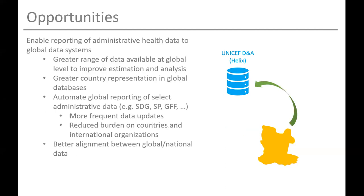We're also looking at reversing the flow of data for a select set of government-approved and authorized indicators, because we feel this has the potential to have a greater range of data available at the global level to improve estimation and analysis. There's an opportunity for countries to have greater representation in global databases while also automating some reporting mechanisms, working towards more frequent data updates and reduced burden on countries and international organizations — avoiding manual ad hoc processes to report the same numbers to 12 different partners.